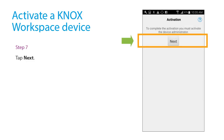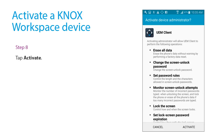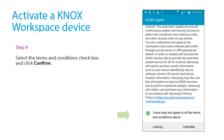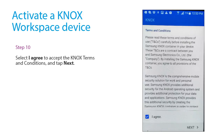Tap Next. Tap Activate. Select the Terms and Conditions checkbox and tap Confirm. Select I agree to accept the Samsung Knox Terms and Conditions and tap Next.